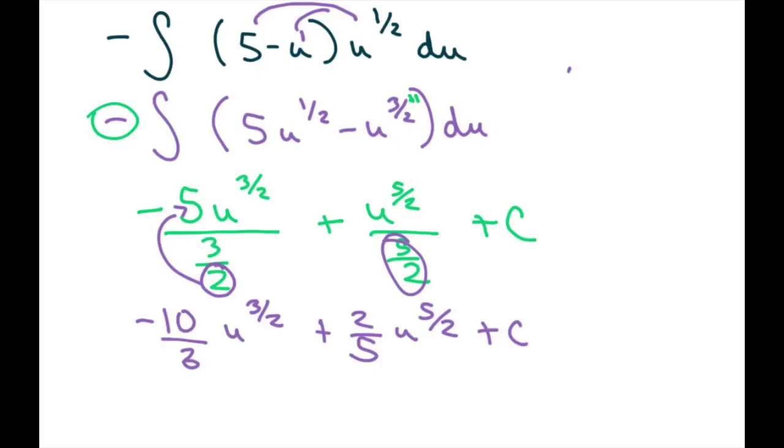And then all you have to do is substitute in for your u. Recall our u equals 5 minus x, so I'm just going to substitute that in everywhere there's a u. And that's your final answer. Thank you, have a nice day, bye.